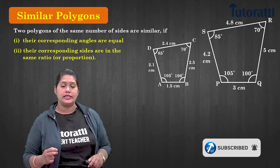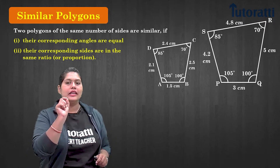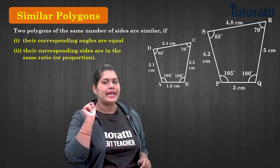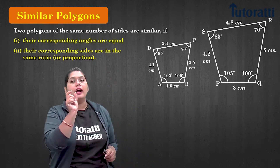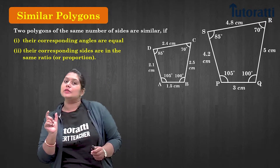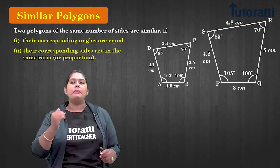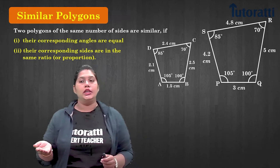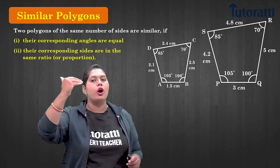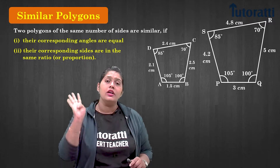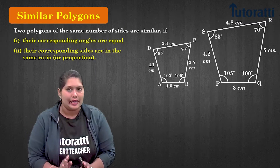The second condition says the ratios of corresponding sides should be equal. Since the quadrilateral is ABCD corresponding to PQRS, the sides AB/PQ should equal BC/QR, which equals CD/RS, which equals DA/SP. There are four sides in this quadrilateral, so four ratios, and all four ratios of the sides should be equal.